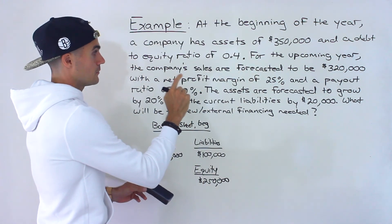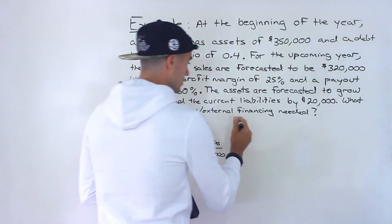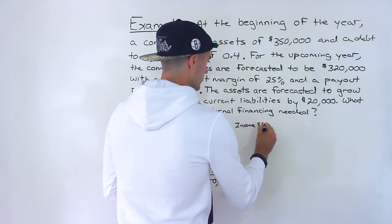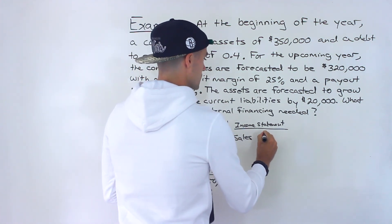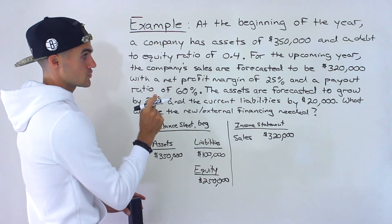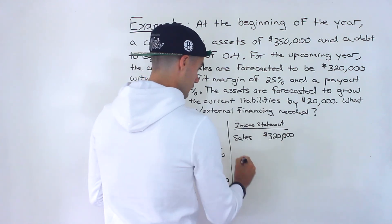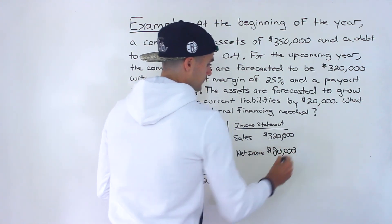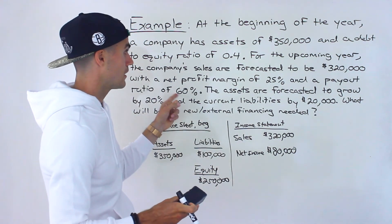Moving on to the upcoming year: the company's sales are forecasted at $320,000. We're given the net profit margin of 25%, and net profit margin equals net income over sales, so 25% of $320,000 gives us net income of $80,000. We need this net income to determine how much is being retained within the company.